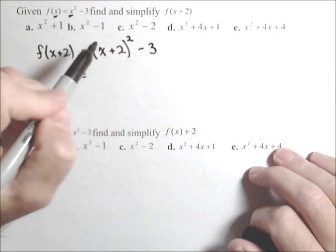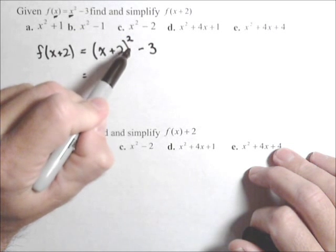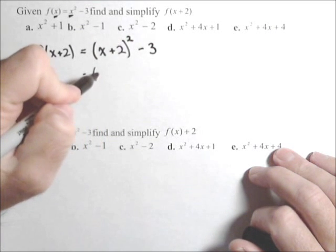And now, common mistake is to say that, okay, well this is x squared plus two squared. Can't do that. This has to be foiled out.